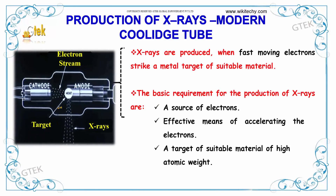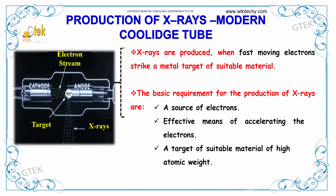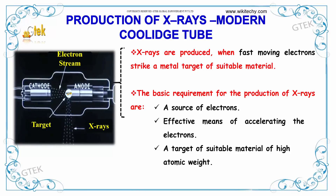This is a modern Coolidge tube where X-rays are produced when fast-moving electrons strike a target of suitable material. The basic requirements for the production of X-rays are: a source of electrons, an effective means of accelerating the electrons, and a target of suitable material of high atomic weight.